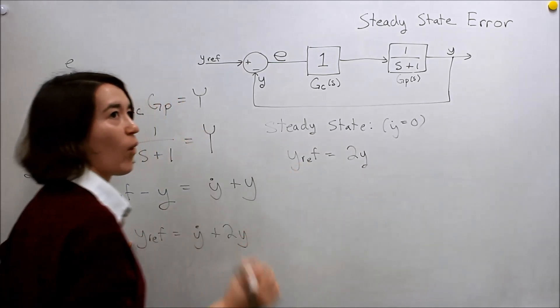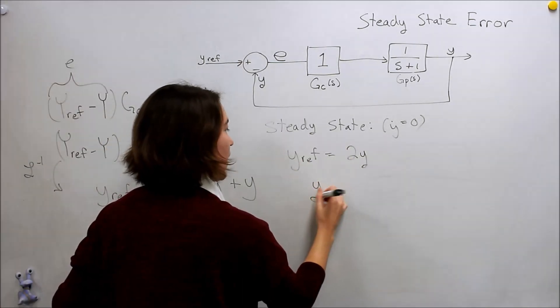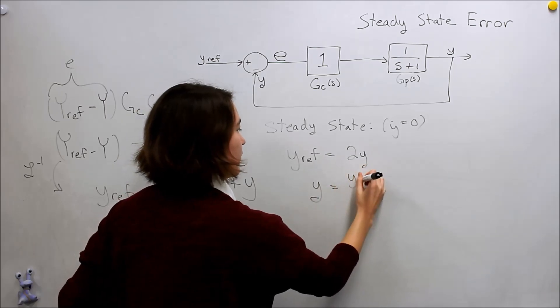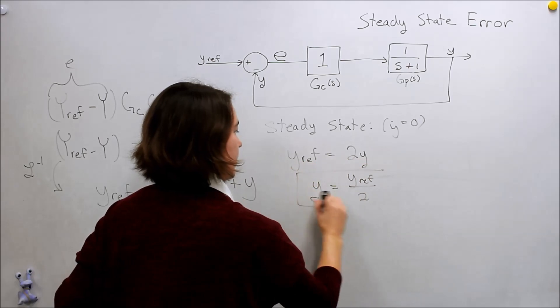If we want to know the steady state y value, we can see pretty easily that would be y is equal to y_ref over 2.